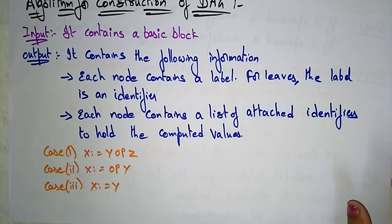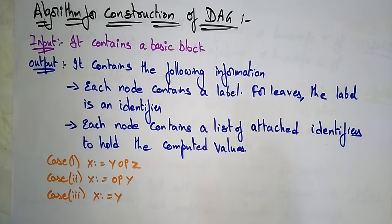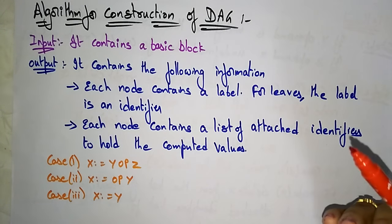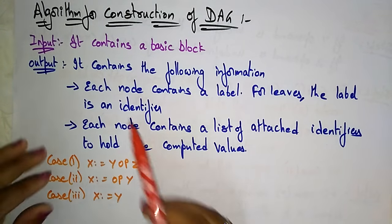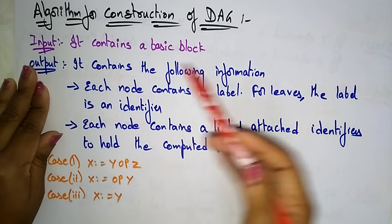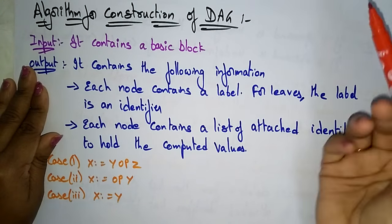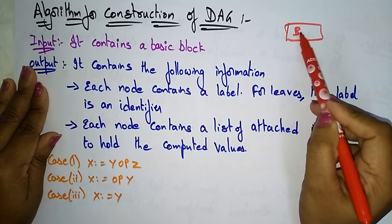Now let's see the algorithm for the construction of the Directed Acyclic Graph — what inputs you take, what the output is, and what steps to follow. The input contains a basic block. The DAG takes the basic block to optimize the expressions.